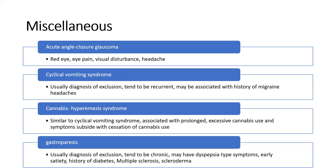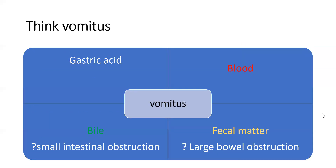Here are some of the miscellaneous causes. Cyclic vomiting syndrome and gastroparesis are usually diagnoses of exclusion that should be considered only after confidently ruling out other more sinister or potentially treatable problems. We also have to analyze the vomitus itself — is it food, acid, bile, blood, or fecal matter? It often correlates with the anatomy and function of our digestive tract, and hence is a good indicator as to where the problem might be.